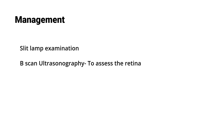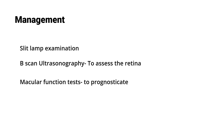For management, you will need to do investigations: slit lamp examination to identify the structures and what is happening behind the opacity, and B-scan ultrasonography to assess the anatomy of the retina. B-scan assesses anatomy only, whereas macular function tests assess the function of the retina — to prognosticate whether the patient's vision will improve after treatment.